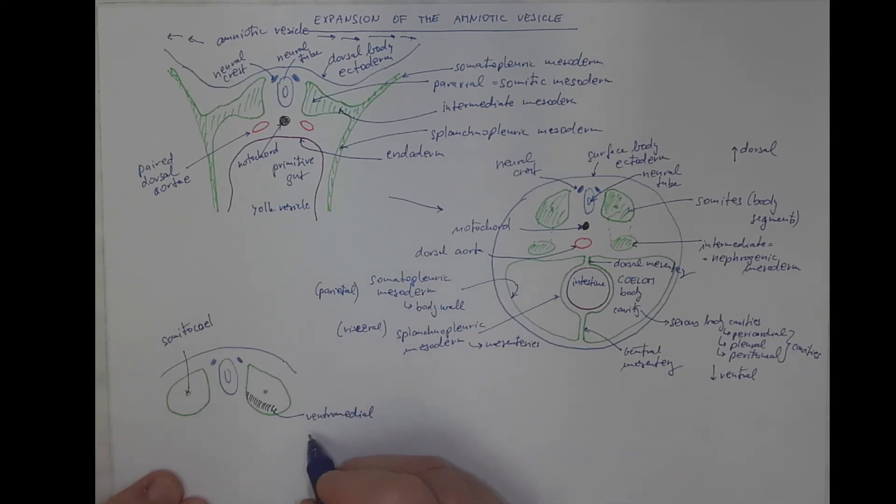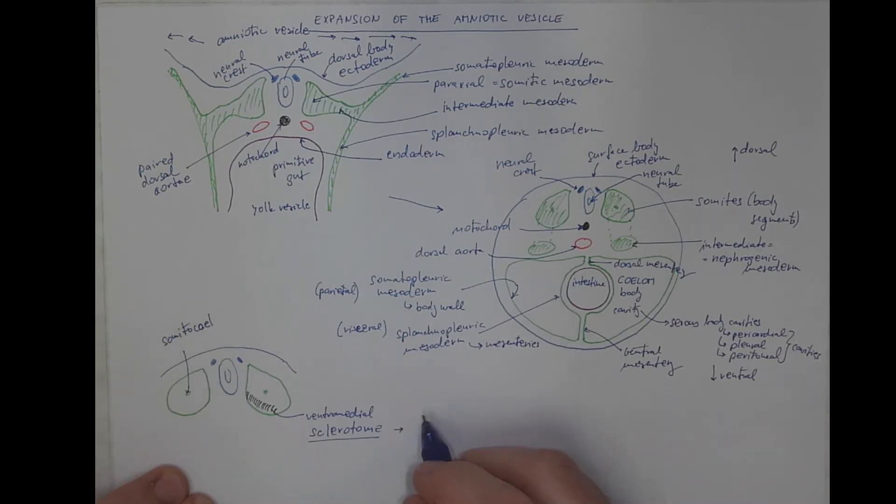And it will be called sclerotome, which will form the vertebrae or ribs, cartilaginous and later on bony structures.